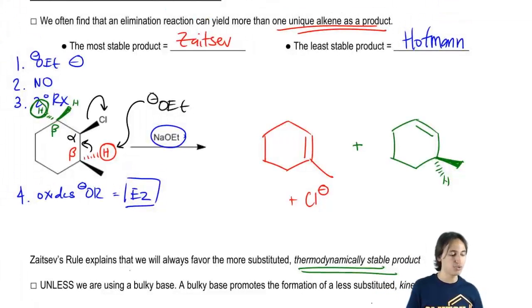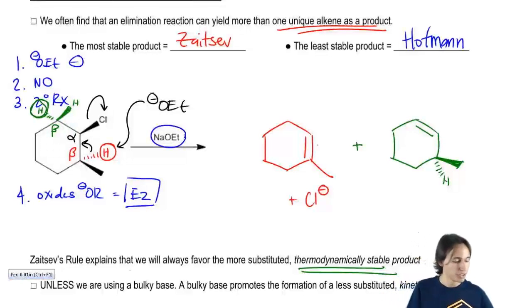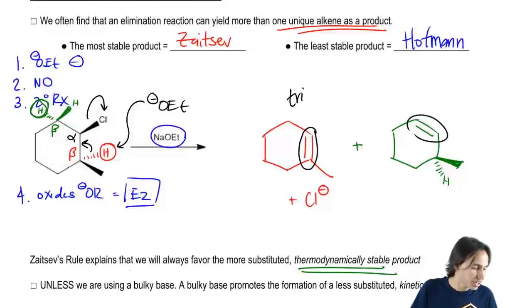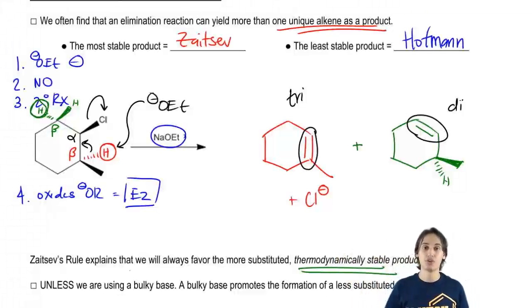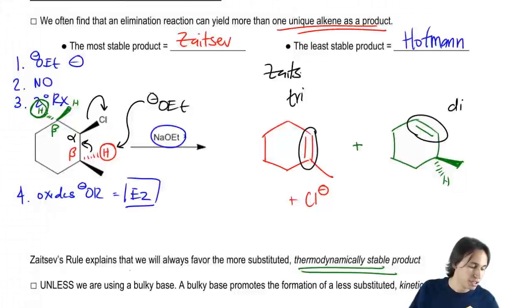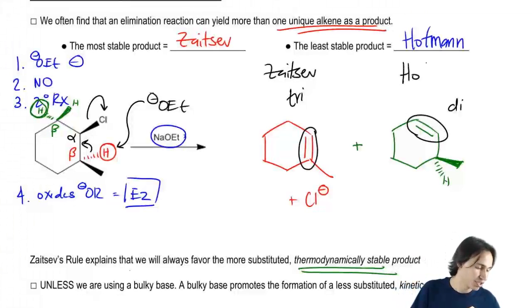Out of these two double bonds, which is more stable and which is less stable? This one here is tri-substituted. This one here is di-substituted. So which one's the overall more stable product? Red. Red is going to be more stable than green. Which one is the Zaitsev product? Red. Because Zaitsev is the more stable one, this one's the less stable—it's Hoffman.